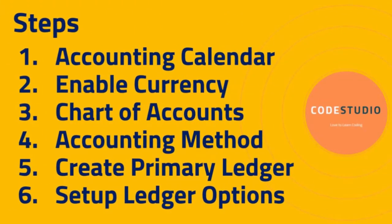To create a primary ledger, we need to create or enable four C's — that is, calendar, currency, chart of accounts and accounting convention, which is nothing but accounting method.